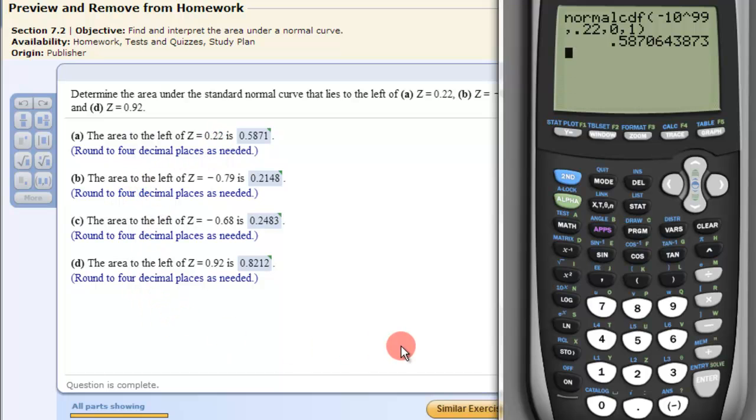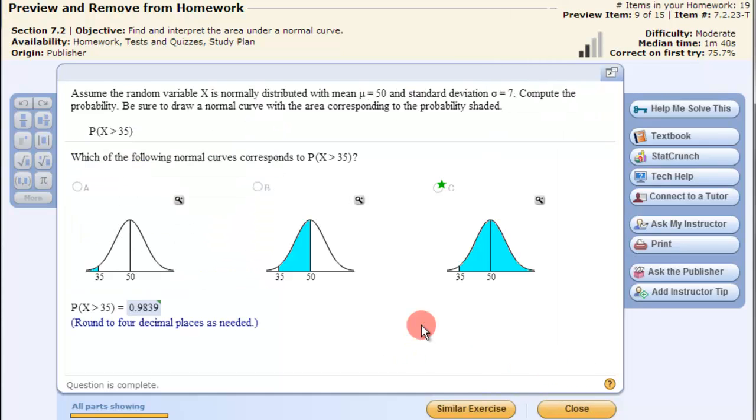Let's look at another example. Here we're looking at the probability of X being greater than 35. It says assume the random variable X is normally distributed with a mean of 50 and a standard deviation of 7. Compute this probability. Well here's a greater than.